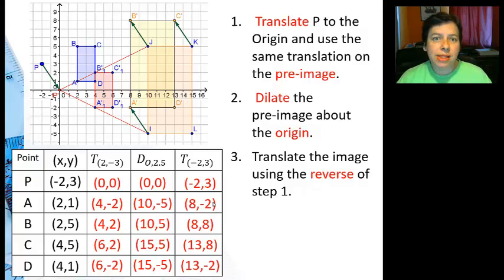So basically, we can dilate around a point that's not the origin if we translate that point first to the origin and the pre-image, do the dilation, and then translate it back. I will show you an equation that does the whole thing as a shortcut, but I think it's a good idea for you to do this step-wise just so you can get used to it.